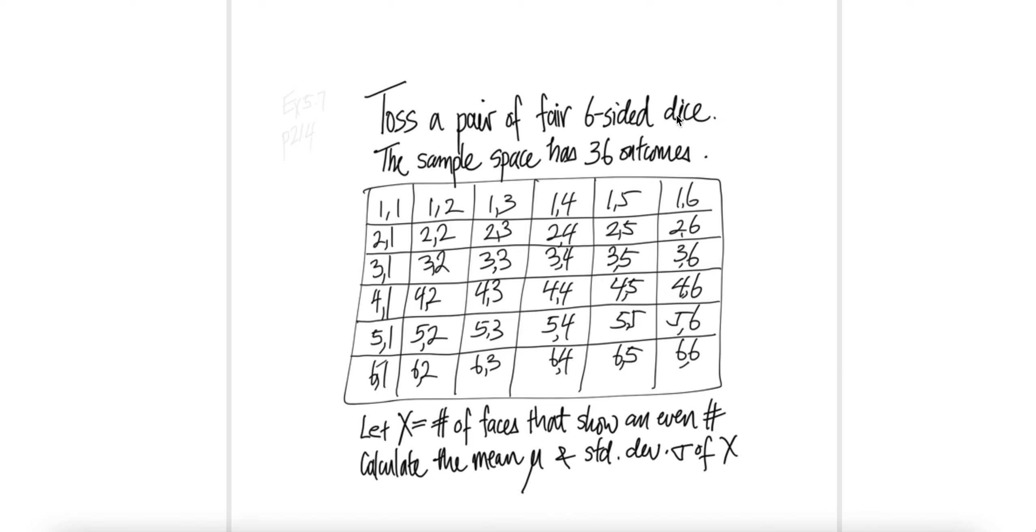Toss a pair of fair six-sided dice. The sample space has 36 outcomes. Here are the sample space. Let X be the number of faces that show an even number. Calculate the mean mu and standard deviation sigma of X.